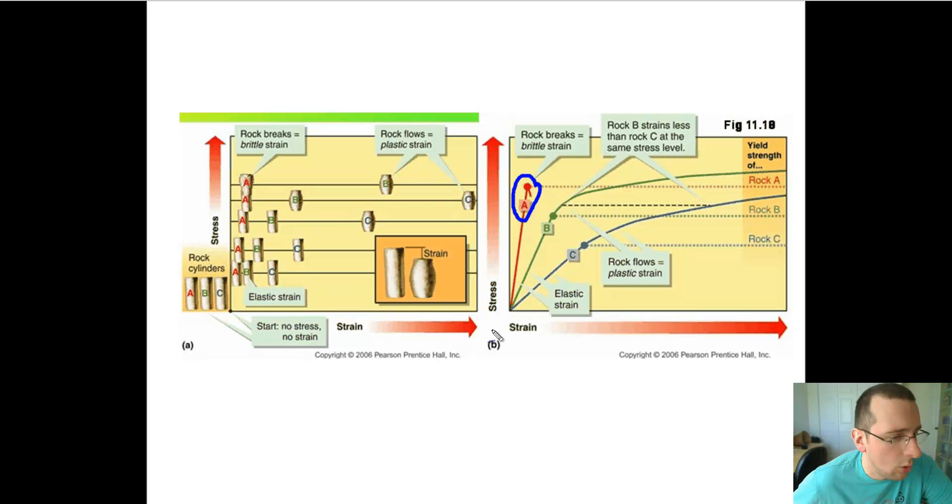Now rock B was a little slower to actually bend. And then it resisted breaking a lot more. And eventually it stopped changing as much and it's more plastic-like. It actually returns to normal if the stress were to pass.